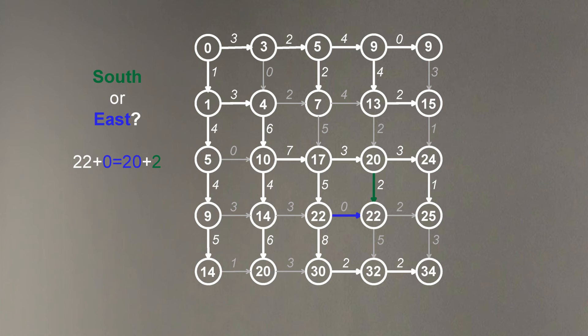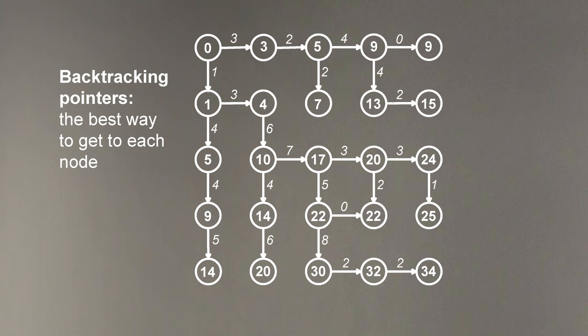When we are doing this, please note that in some cases, instead of making a decision south or east, we will make a decision south and east. For example, in this particular node, we are comparing 22 plus 0, which is equal to 20 plus 2. Which means that both horizontal and vertical edges entering into this vertex are in bold.